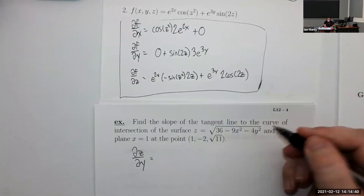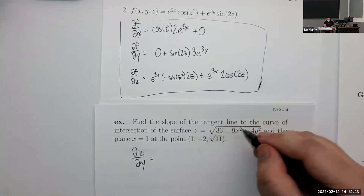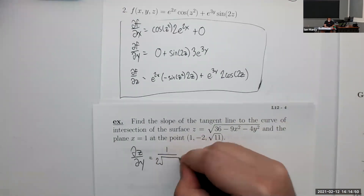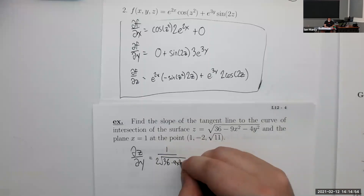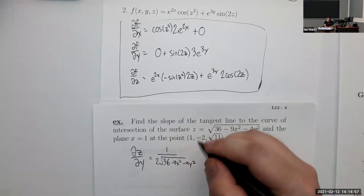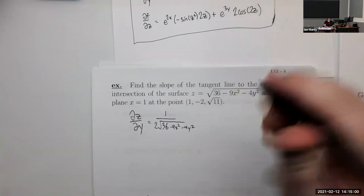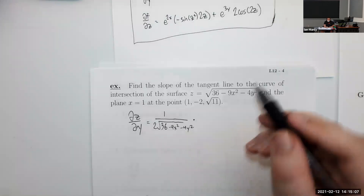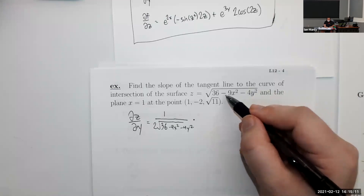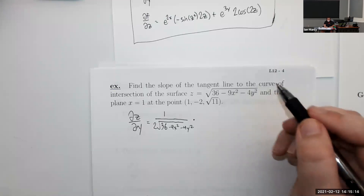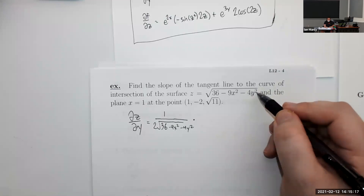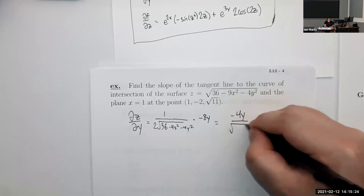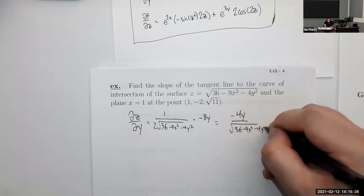We need partial z partial y. The derivative of √(something) is 1 over (2√(something)). Then multiply by the y-derivative of the inside. The y-derivative of 36 is zero, of −9x² (a constant) is zero, and of −4y² is −8y. Simplified: −4y over √(36−9x²−4y²).